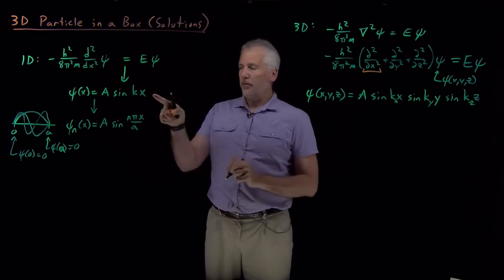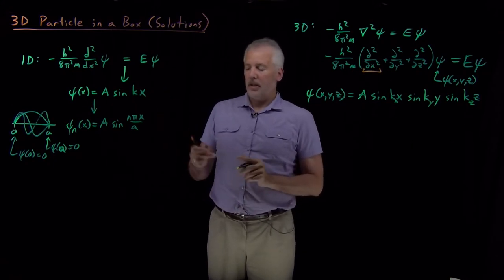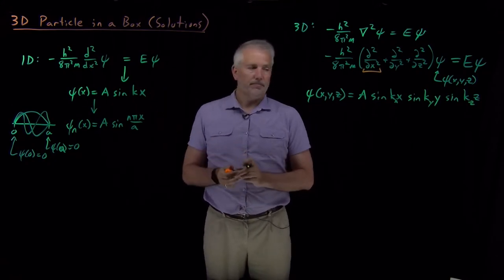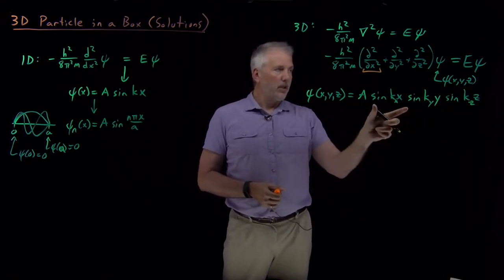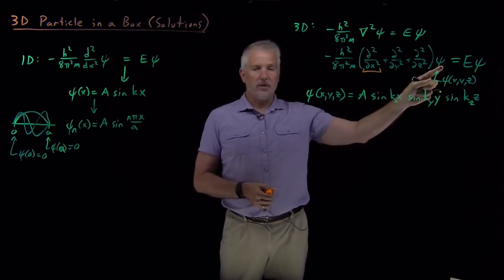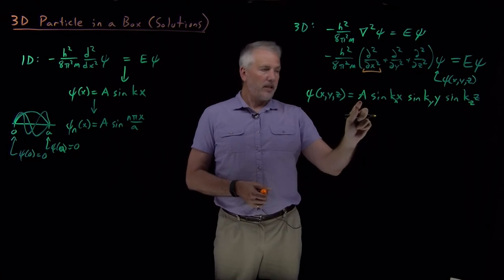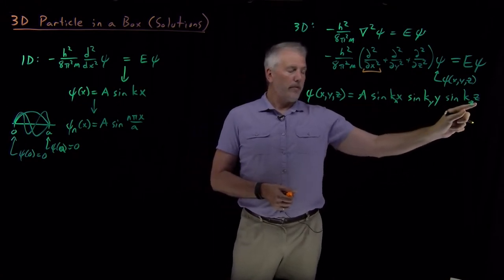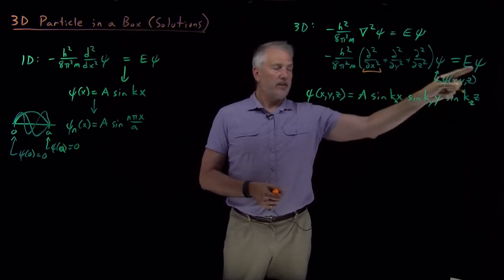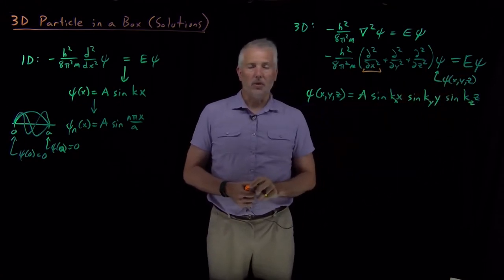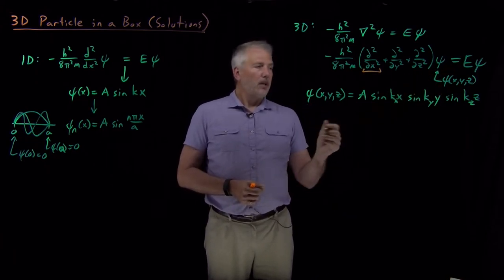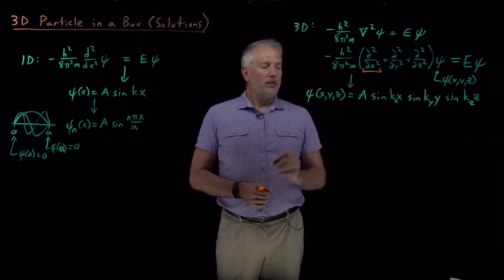That's the solution we've obtained for Schrödinger's equation. If we plug this expression back in, we can confirm that taking the second derivatives of this function does in fact give us back the same function multiplied by some constants. That's step number one.